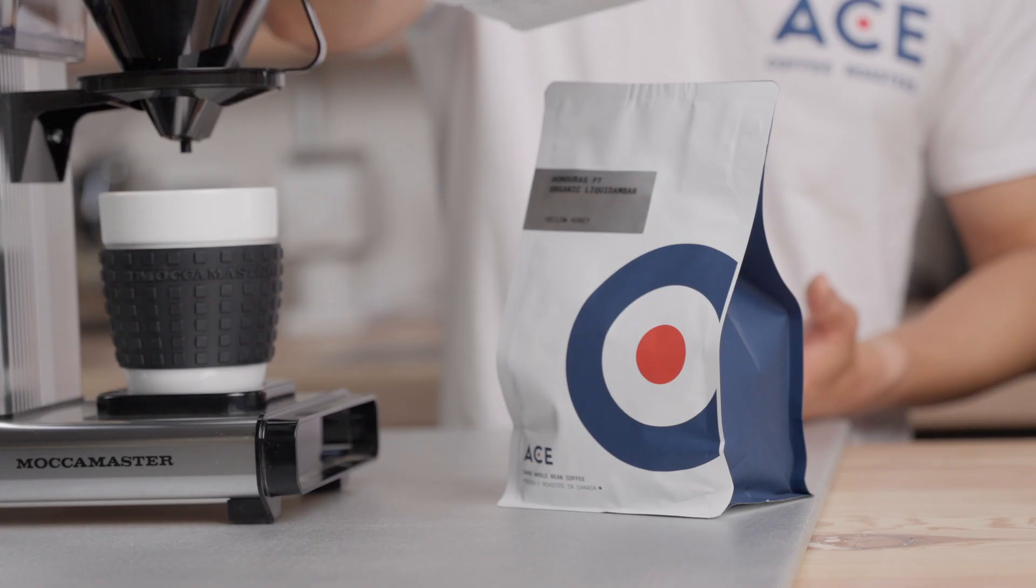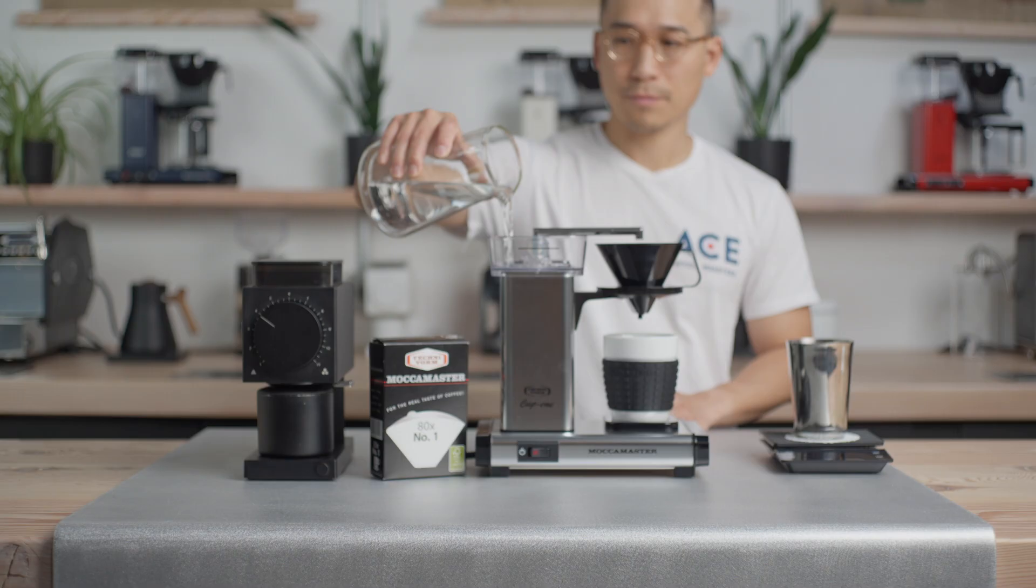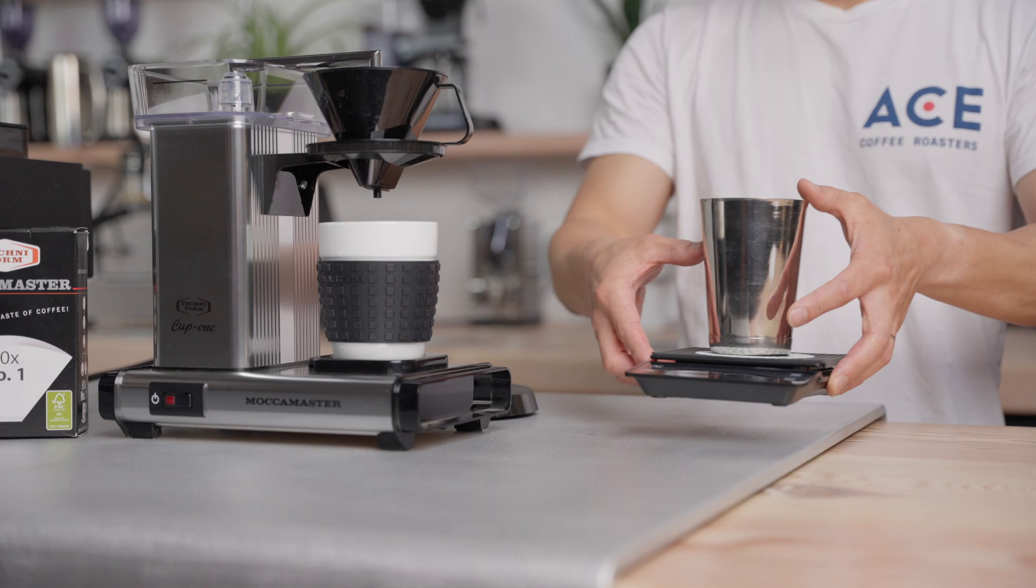Before we start brewing, there are some things we need to prepare. Have a kettle or container ready with at least 300ml of water, a scale and a grinder.